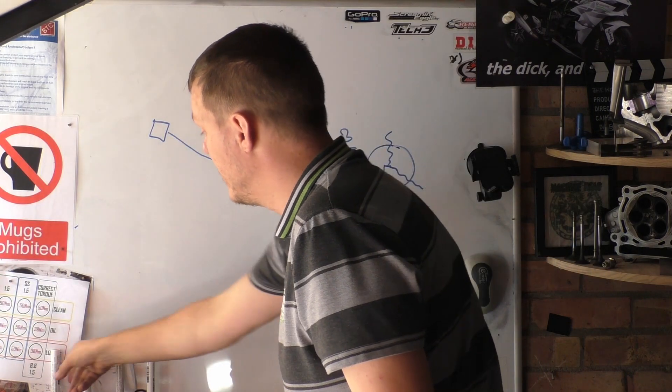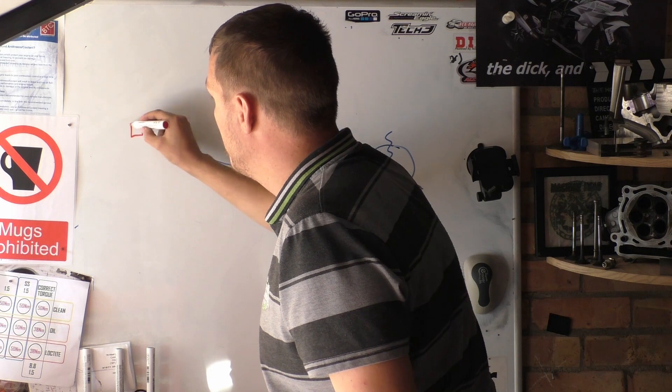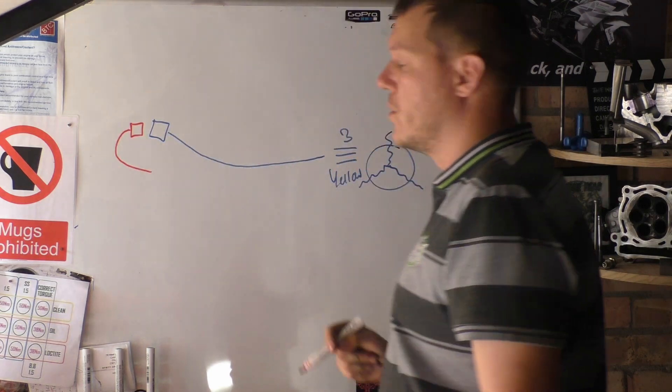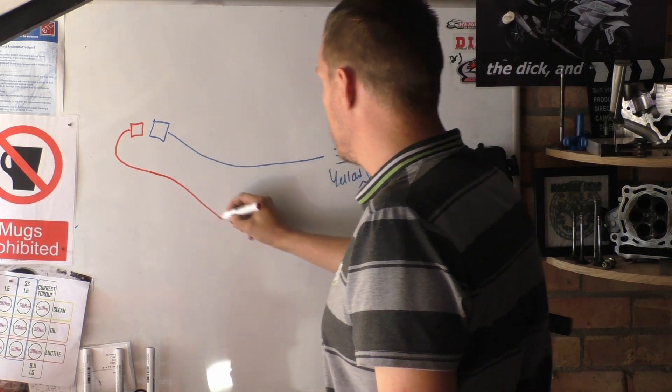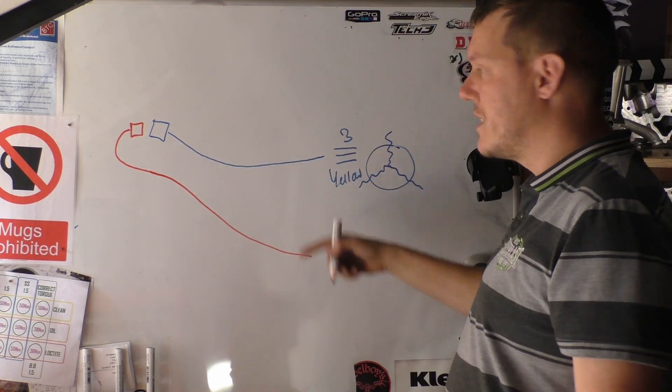Then what the bike has is it has a black connector that goes back into the loom. You can see that, that disappears back into the loom. This thing goes all the way down here, it's the wrong orientation.